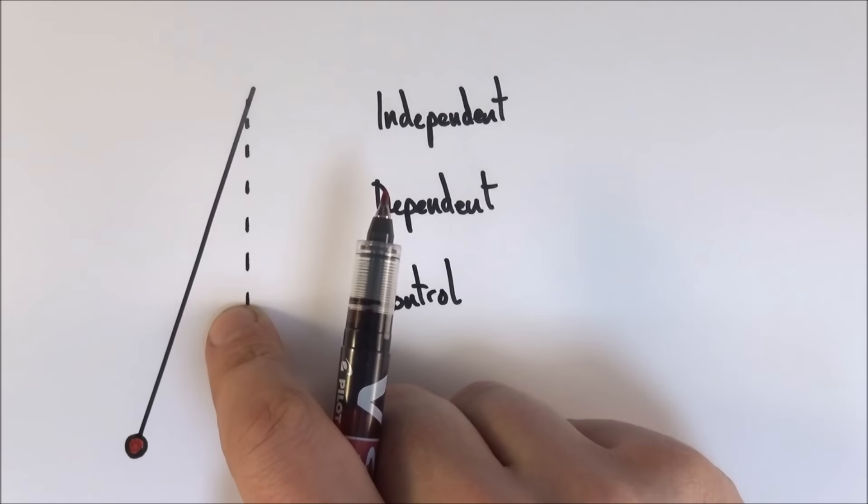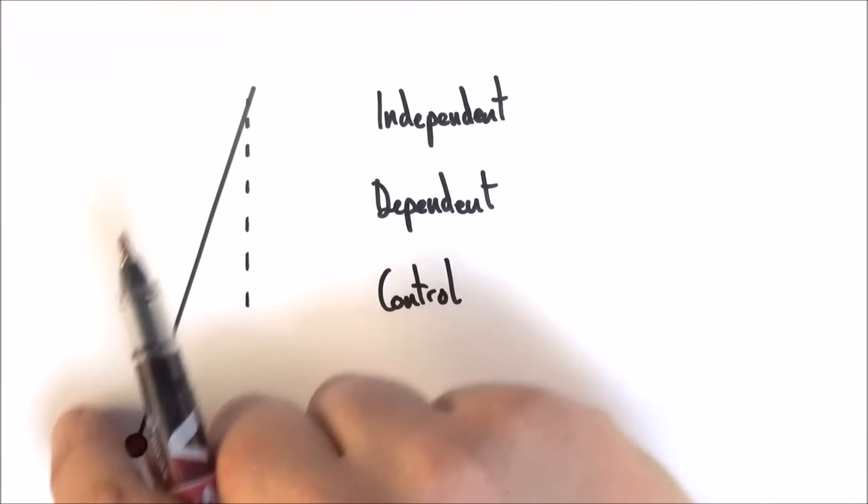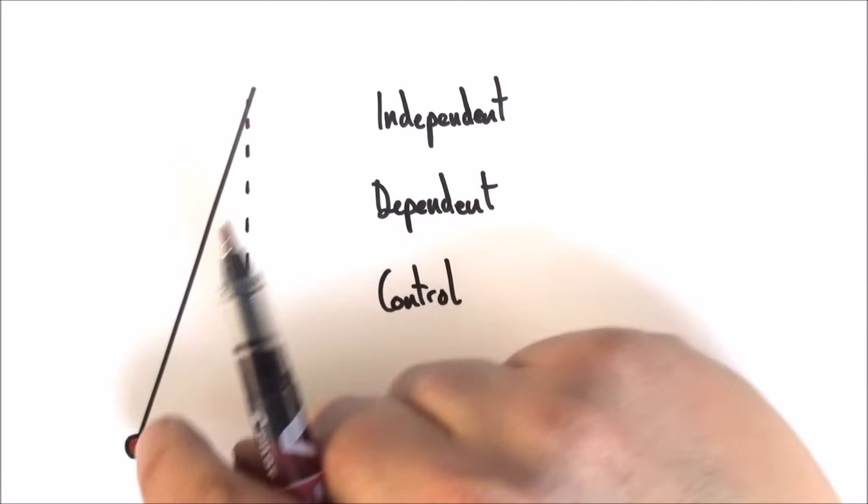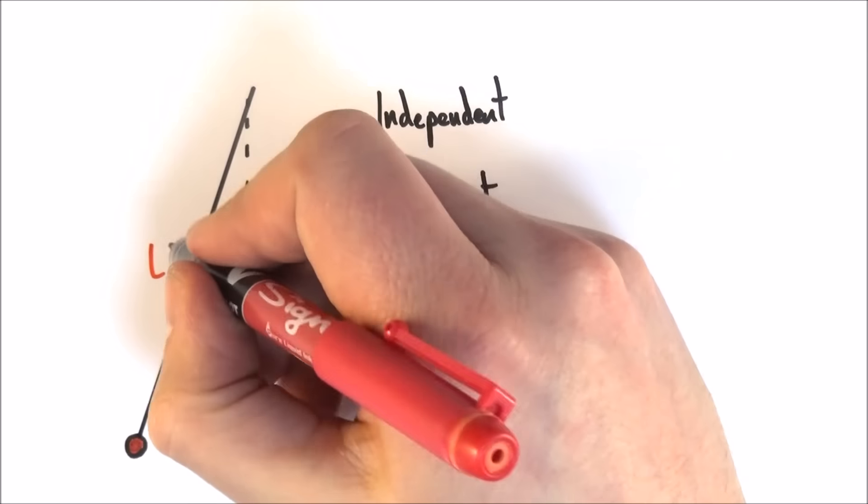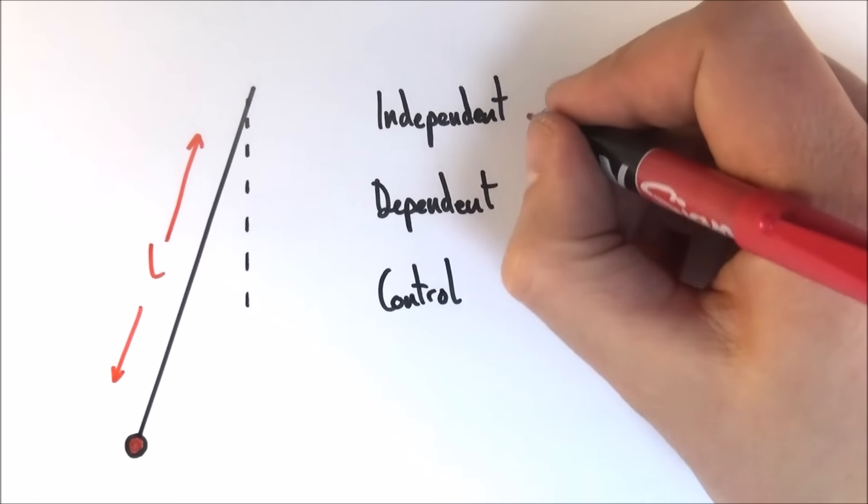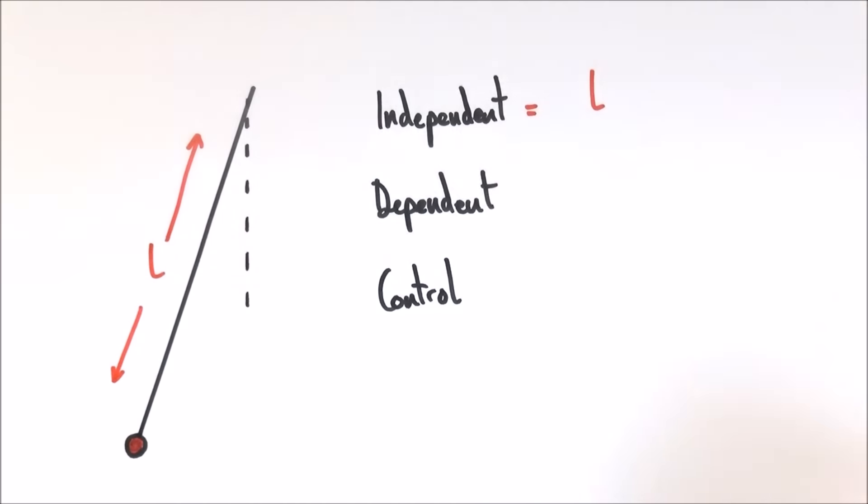So maybe you're testing a pendulum and something that you want to change is the length of the pendulum from the pivot to the center of mass. So this thing here, the length, is what you decide to change. That means my independent variable is my length.